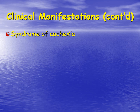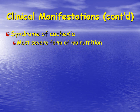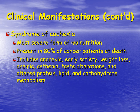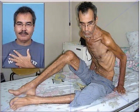We also see in many patients the syndrome of cachexia — the most severe form of malnutrition, present in approximately 80% of all cancer patients at time of death. This includes anorexia, early satiety (eating a couple of bites and feeling full), weight loss, severe anemia, asthenia, taste alterations, and altered protein, lipid, and carbohydrate metabolism. This can be due to the cancer itself or treatment as well. Here is a gentleman — this is what he looked like before, and this is what he looks like after — many times these cancer patients at time of death are simply a skeleton with skin stretched over it.